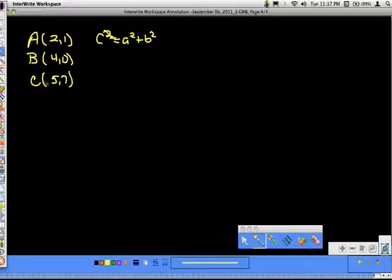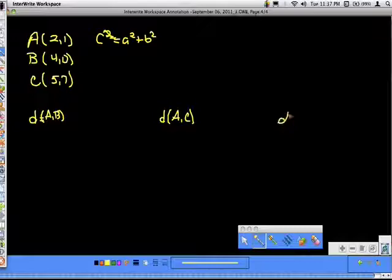So I need to find the distance from A to B. I'm going to need to find the distance from A to C. And I'm going to need to find the distance from B to C. And then I can fill each of these in to one of these three distances and see if I actually get the left side of the equation equal to the right side.